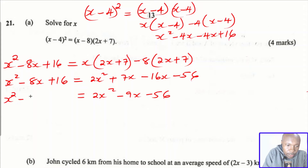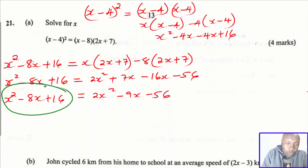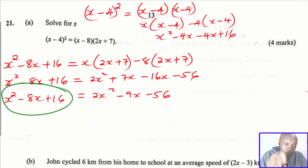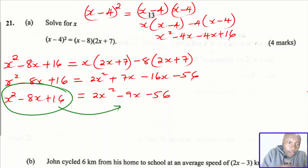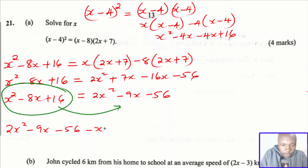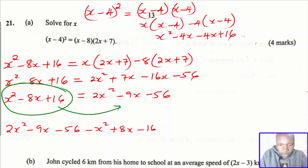The left hand side remains the same. Now we take everything from the left hand side over to the right hand side. Taking x squared gives negative x squared on the right; taking negative 8x gives positive 8x; and positive 16 becomes negative 16 on the right.